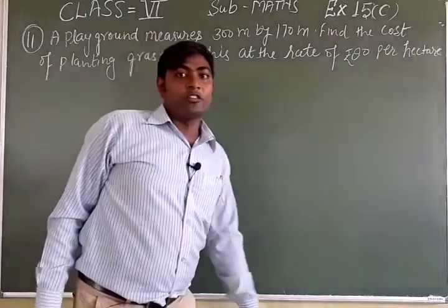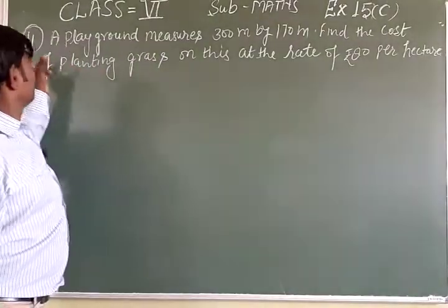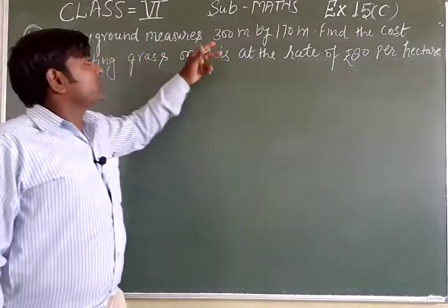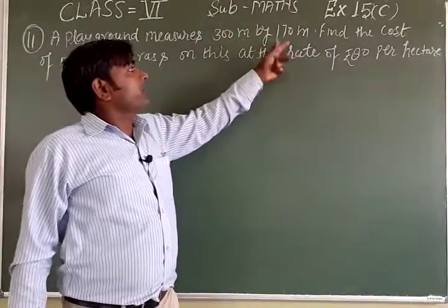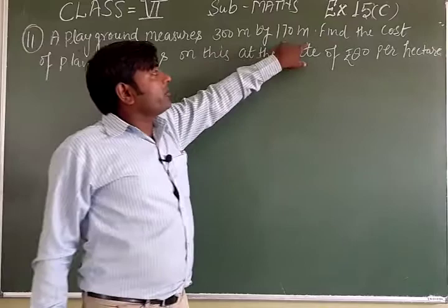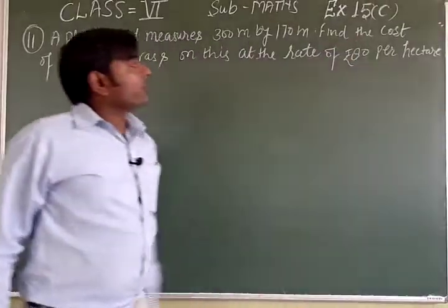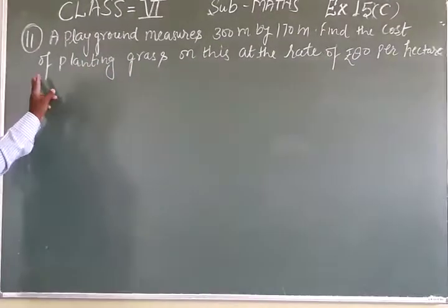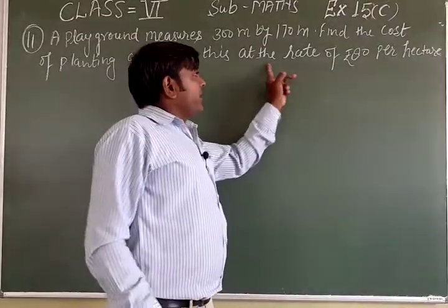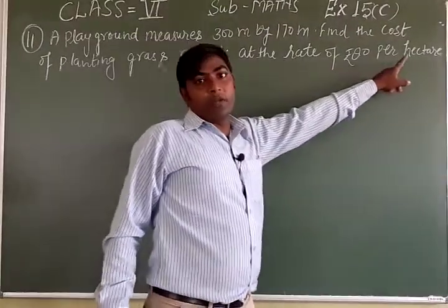Hello students. Navishakarta exercise 15(C), question number 11. A playground measures 300 meters by 170 meters. Find the cost of planting grass on this at the rate of 80 rupees per hectare.